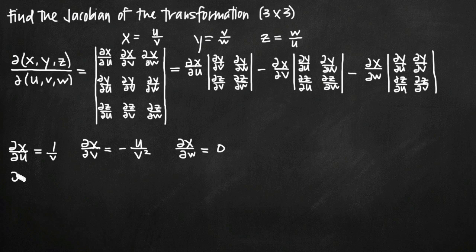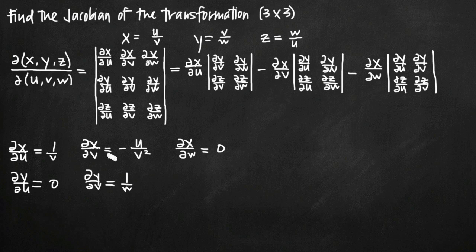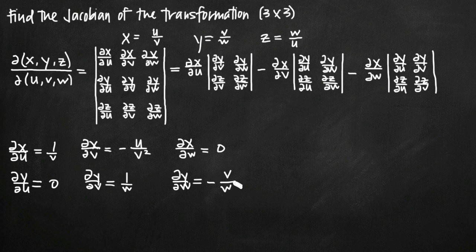Now if we take the partial derivatives of y with respect to u, v, and w: with respect to u, there is no u in our equation, so the partial derivative will be 0. The partial derivative of y with respect to v gives us 1 over w — the same thought process as the partial derivative of x with respect to u. And the partial derivative of y with respect to w gives us negative v over w squared.